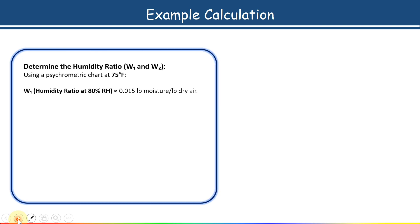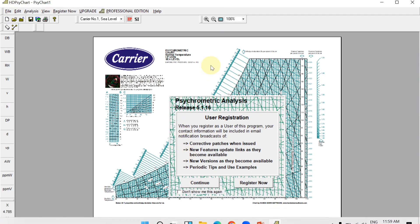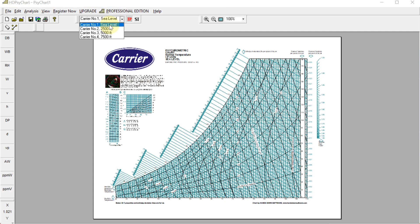Next, calculate the humidity ratio value using psychrometric software. Based on the supply temperature of 75°F and the initial relative humidity of 80%, from the psychrometric chart or software we get a humidity ratio W1 of 0.015 pounds of moisture per pound of dry air. To use the software, open it, hit Continue, and select the sea level — if your sea level is less than 2,500 feet, select the first option. The sea level value can be found from the ASHRAE handbook outside design data.